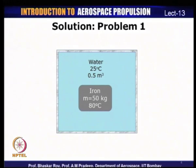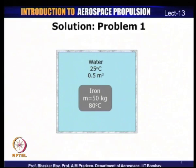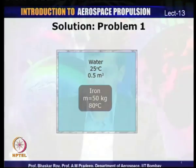The illustration is that we have an iron block of 50 kilograms at 80 degree Celsius dropped into water at 25 degree Celsius. The system is enclosed within an adiabatic wall — there is no heat transfer between the system and surroundings. Within this closed system, energy interaction between the iron block and water is governed by the first law of thermodynamics: energy from the hotter iron transfers to the water until thermal equilibrium is reached.